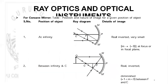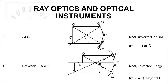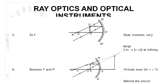For a concave mirror, there are six different cases. In the first five cases the image is real and inverted. When the object is at infinity, the image is formed at the focal point. When the object is beyond C, the image is formed between f and c. When the object is at C, the image is at C. When the object is between f and C, the image is beyond C. When the object is at f, the image is at infinity. When the object is between f and the pole, the image is virtual and formed behind the mirror.